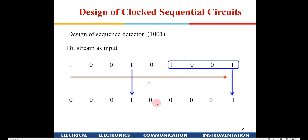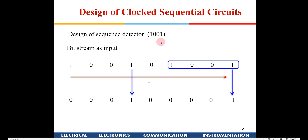It is continuously monitoring the inputs, and whenever this particular desired sequence — we have taken a specific example of 1, 0, 0, 1, but it can be any sequence, you can set any PIN. We are just taking one particular example and trying to design that, and you should be able to take any other sequence. Also, we are taking a 4-bit sequence; it could be more than a 4-bit sequence. We are just taking one example to understand the concept.